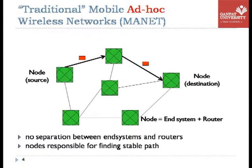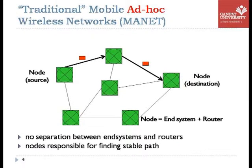Now let's look at the mobile ad hoc network. In a mobile ad hoc network, we cannot make any separation between the end system and the router. Every node will have to search for the path, and that path should lead the packet from source to destination. So there are no separations between end systems and routers, and the nodes themselves are responsible for searching the path.